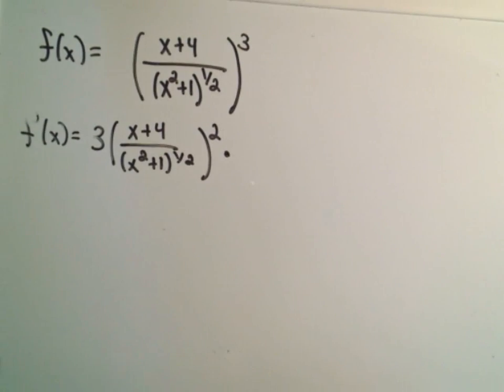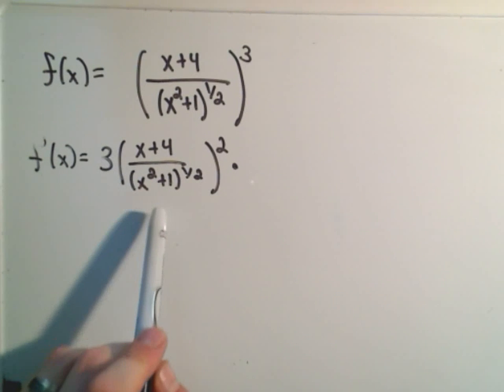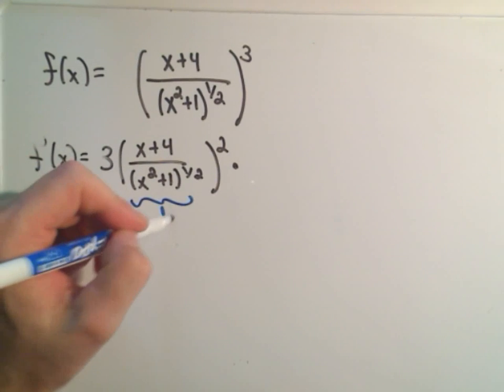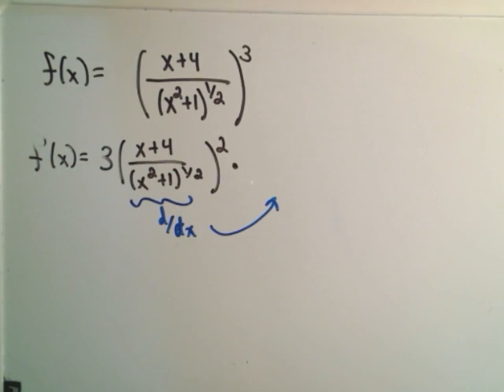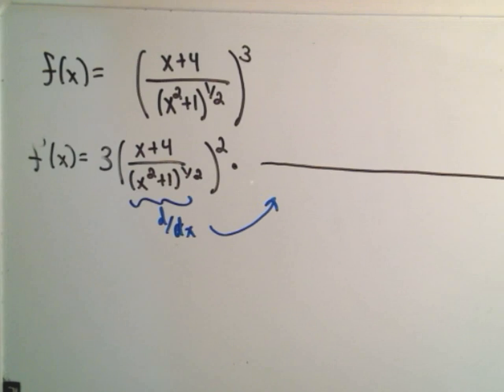But now by the chain rule it says okay we did the outside part, but now we have to move on the inside and take the derivative of the inside part. So we have to take the derivative of all the inside. So to do that we'll have to use the good old quotient rule. So there's my big O fraction.